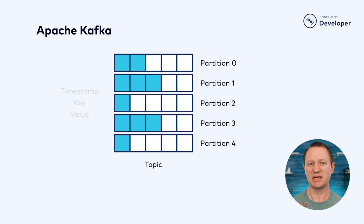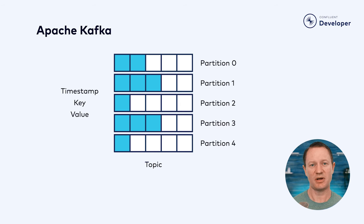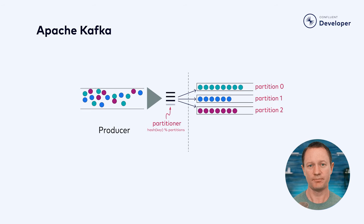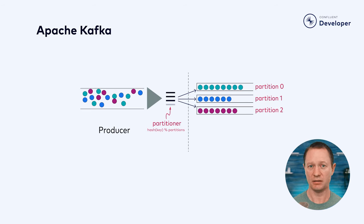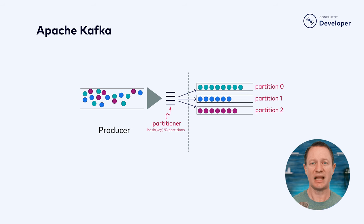Each of these messages contains three elements: a key, the value of the message, and a timestamp of when the message was produced. If you provide a key with the message, the producer first computes a hash on the key. It then applies a mod operation with the total number of partitions to find the partition to produce to. This allows messages with the same key to be written to the same partition, and in the correct order.